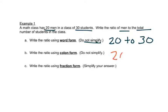In colon form we would write the 20 still has to come first because the men come first in this problem. So we'd write 20 to 30. We still read it in the same way. There's just a colon between the two numbers.